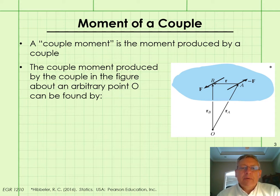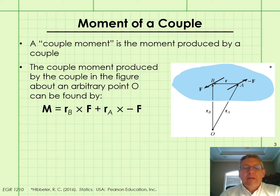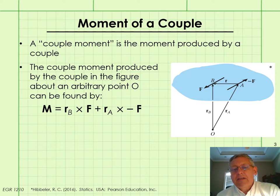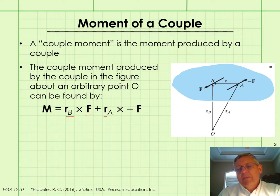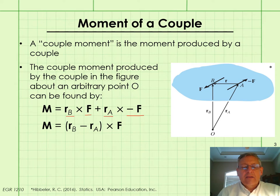Let's look at the couple moment produced by the couple shown in the figure about an arbitrary point O. We can express that moment as the moment of F about point O plus the moment of minus F about point O, with the moment of F about O being the cross product of a position vector from O to the line of action of F, and the cross product of a position vector from O to the line of action of negative F and negative F.